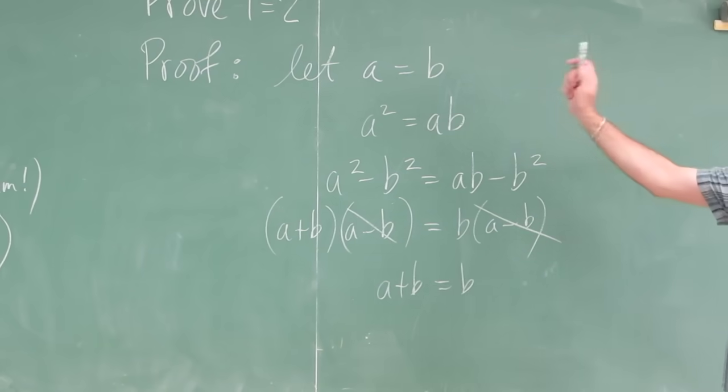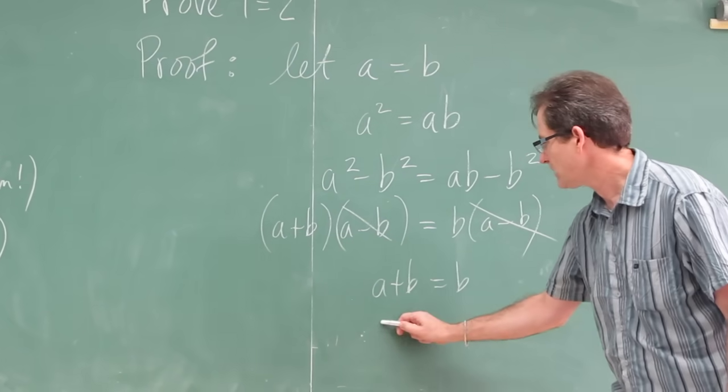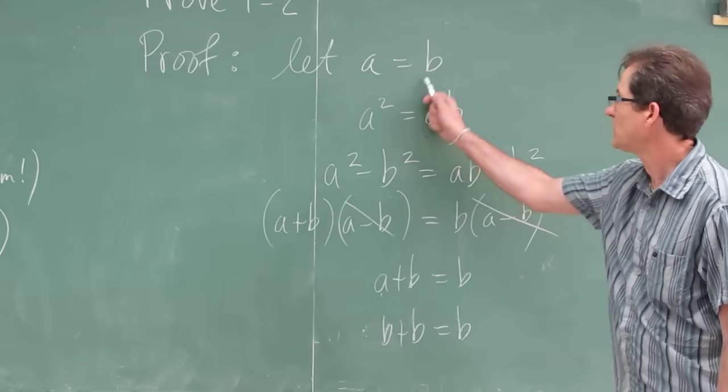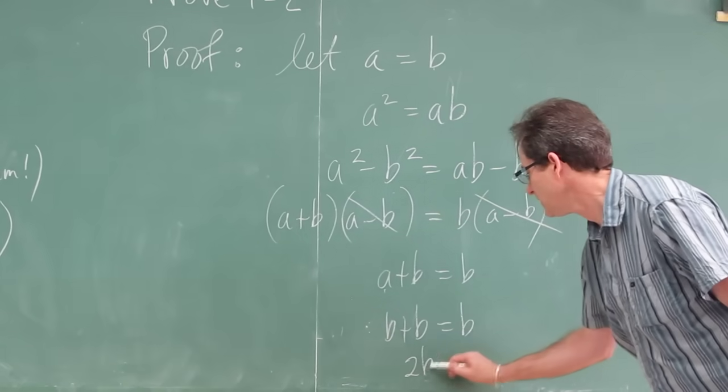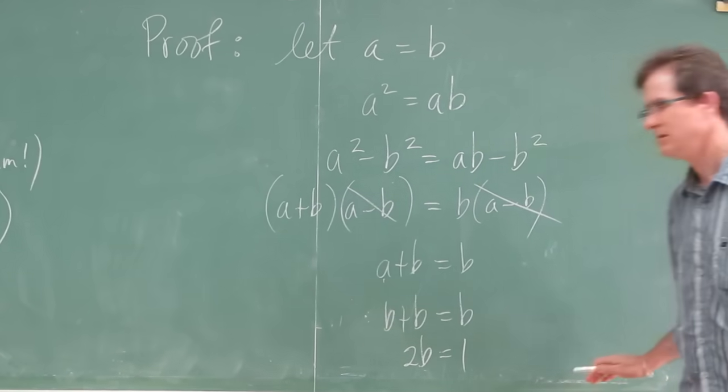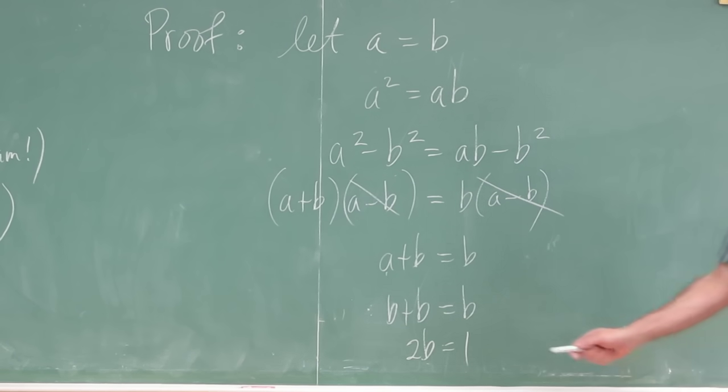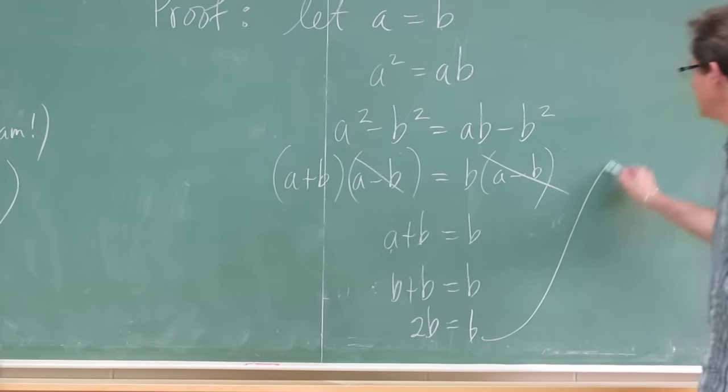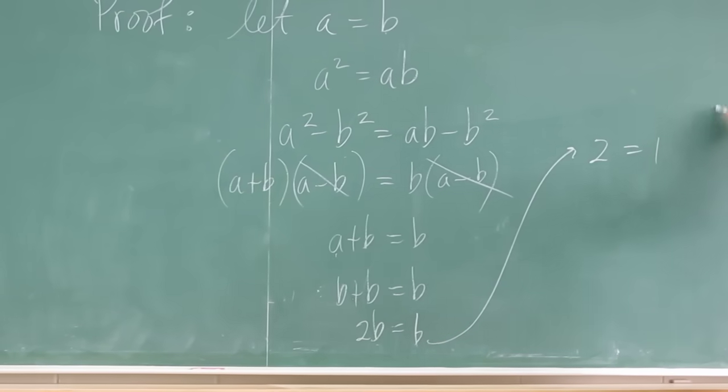But a is equal to b, so that's the same as b plus b equals b. Because a is equal to b. Or, 2b equals b. Divide both sides by b, and you get 2 equals 1. QED.